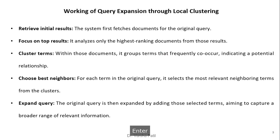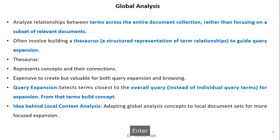First, let us review local clustering before comparing it with local context analysis. In local clustering, the following steps are followed: retrieve initial results — the system fetches documents for the original query; it analyzes only the high-ranked documents; within those documents it groups terms that frequently co-occur, indicating a potential relationship, using a variety of matrices. For each term in the original query it selects the most relevant neighboring terms from the cluster, then expands the original query by adding those selected terms to capture a broader range of relevant information.